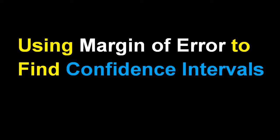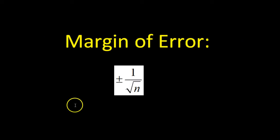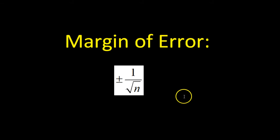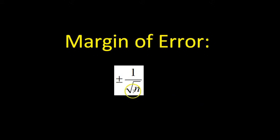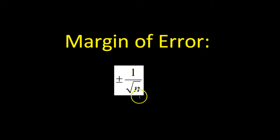This video is about using margin of error to find confidence intervals. As soon as we start talking margin of error, I have to mention that there are two different formulas we have dealt with. This is your general basic margin of error formula: 1 over the square root of the sample size.